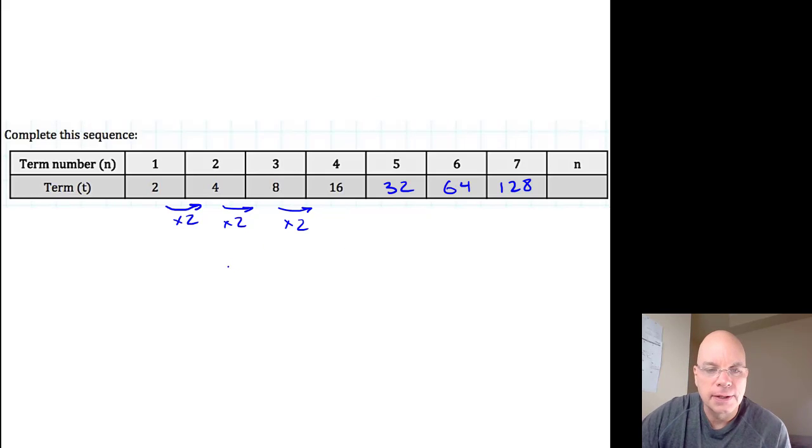...if you had two times two times two times two, wouldn't that be two to the fourth power, or sixteen? So here, the n is the exponent. The rule for this sequence is two to the n.